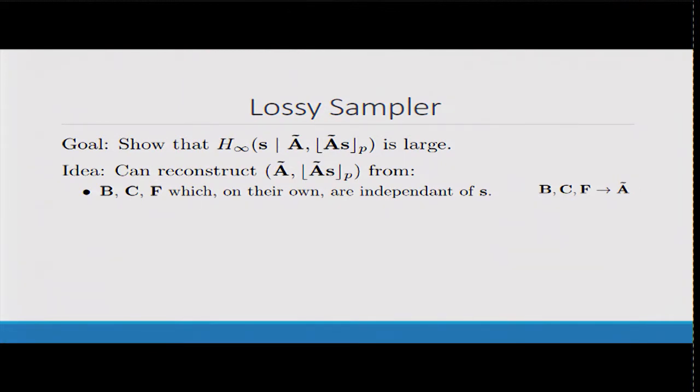Now I'm going to show you which information we give you from which we know you can reconstruct these values. The first thing we're going to do is give you the matrices B, C, and F. B, C, and F are independent of s, so you're not leaking anything about s here. And from B, C, and F, you can already reconstruct A tilde. The next thing we'd give you would be C times s. C is shrinking, so there's still got to be some entropy in s left. Moreover, with C times s, you can already reconstruct BCs rounded.